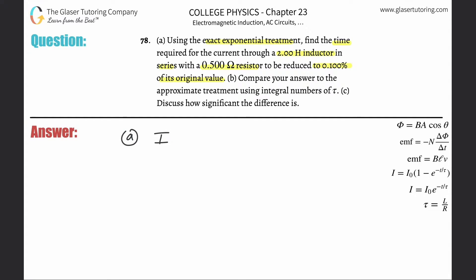I'm going to use that the current at some point in time will equal the initial current or the max current multiplied by e raised to the negative elapsed time divided by the time constant. They're giving us a percentage, and we've seen this pattern now several times in the past problems. I'm going to divide this over.